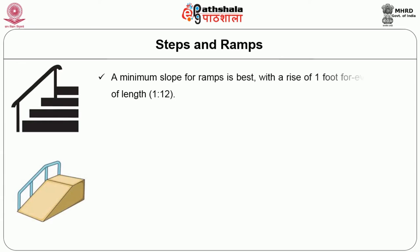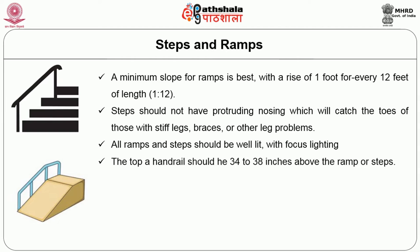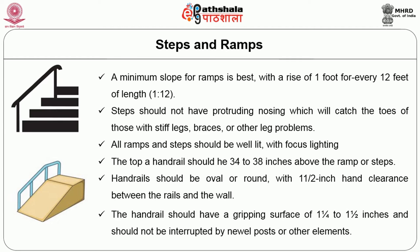Steps and ramps: A minimum slope for ramps is best with a rise of 1 foot for every 12 feet of length. Steps should not have protruding nosing, which will catch the toes of those with stiff legs, braces, or other leg problems. All ramps and steps should be well lit with focus lighting. At the top, a handrail should be 34 to 38 inches above the ramp or steps. Handrails should be oval or round with 1.5-inch hand clearance between the rails and the wall. The handrail should have a gripping surface of 1.25 to 1.5 inches and should not be interrupted by new wall posts or other elements.